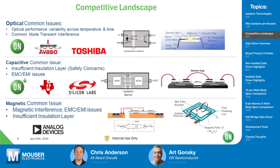The capacitive isolation approach also has issues, primarily insufficient insulation layer — there's a safety concern when going over five kilovolts from primary to secondary, especially if a lightning test is involved. The magnetic isolation approach has a magnetic interference concern for EMC and EMI; the coil on the primary and the coil on the secondary act as a great antenna. In a high-noise environment like a machine shop or industrial robotics application, that's not going to be ideal.